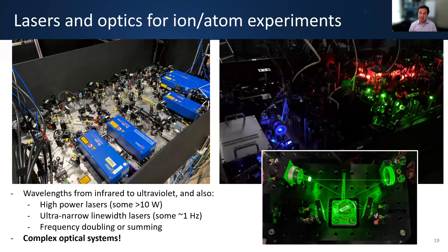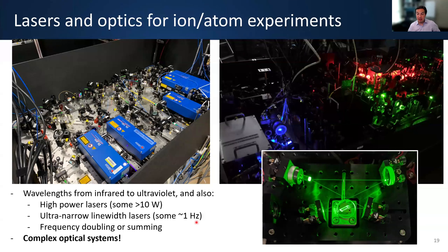A lot of hardware is necessary for these experiments. Lasers are essential to ion- and atom-based qubits, and you need lots of wavelengths — from infrared to ultraviolet depending on the atom or ion. Some lasers might have to be high power, more than 10 watts for Rydberg gates or optical tweezers. Some need very narrow linewidths — very low noise. Some need to be frequency doubled or summed in nonlinear crystals. As you can see, this is a very complicated optical system where each component was placed by hand and tuned exactly into position.